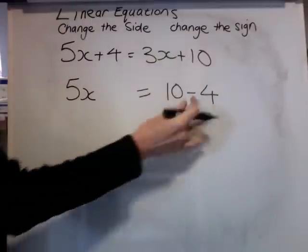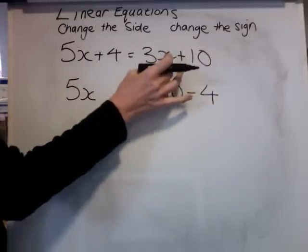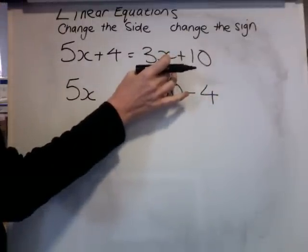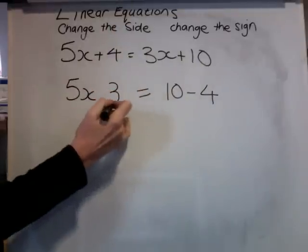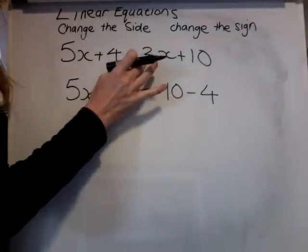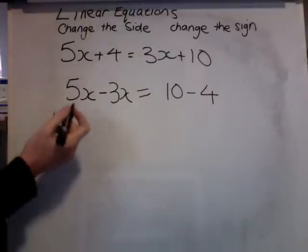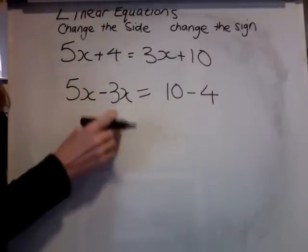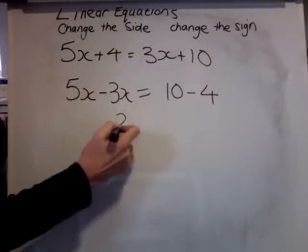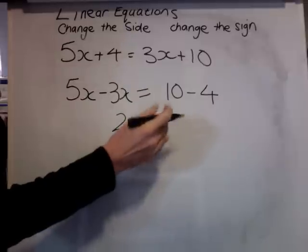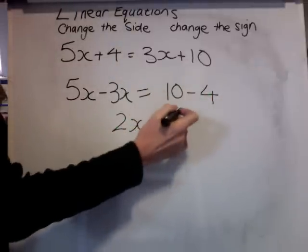Now we'll go over to the other side. 3X plus 10. I want numbers on this side, so I want to get rid of 3X. Change the side. Change the sign. It was plus. Now it's minus. Now I can see that 5X take away 3X is 2X. 10 take away 4 is 6.